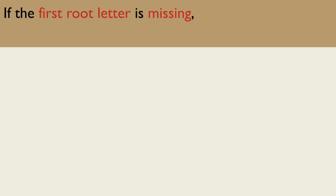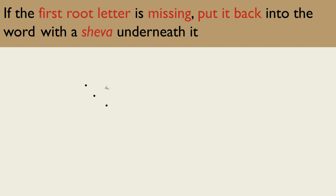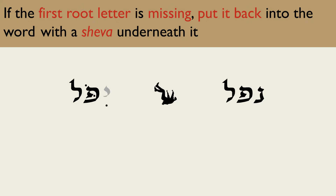If you identify the root and realize that the first root letter is missing, you will need to put the missing first root letter back into the word in order to identify the Binyan correctly. Write the word out again and insert the missing first root letter with a Shava under it. The root of the word Yipol is Nun Pei Lamed; the first root letter Nun is missing. Write the word out again, inserting the missing Nun and placing a Shava underneath it.